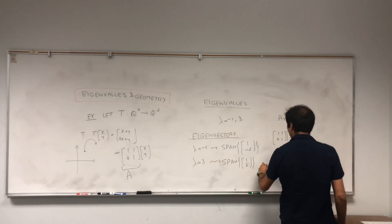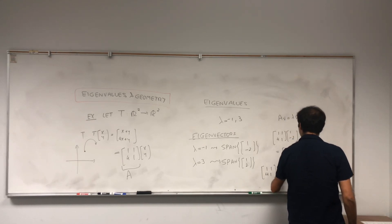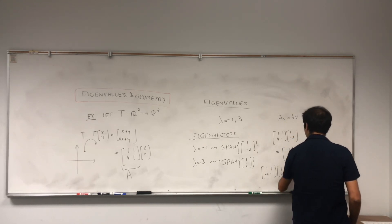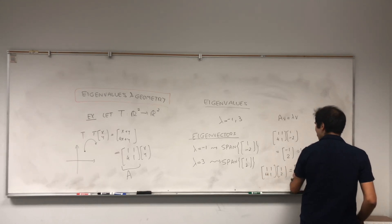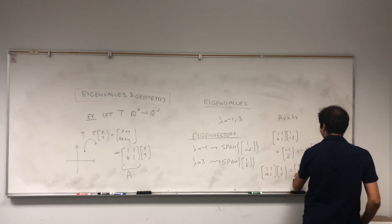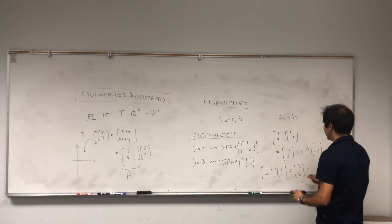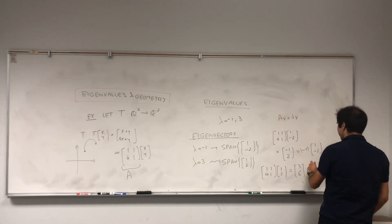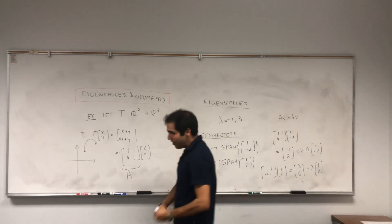Similarly, what happens when you apply A to (1, 2)? That is [[1,1],[4,1]] times (1, 2). So 1 + 2 = 3, and 4 + 2 = 6. So if you apply A to (1, 2), you get (3, 6). And that's 3 times (1, 2). The question is, what does that tell us geometrically?